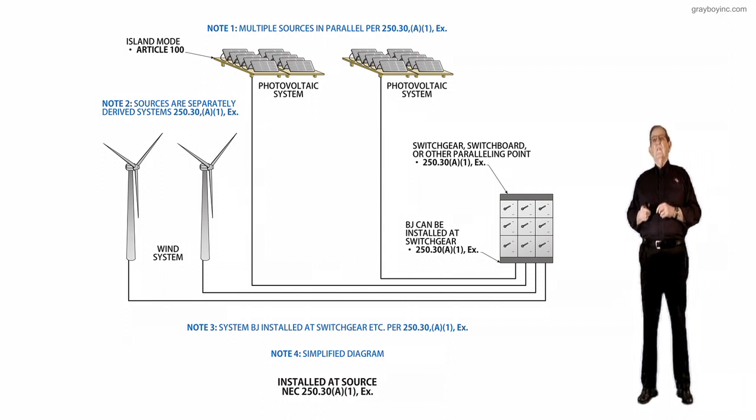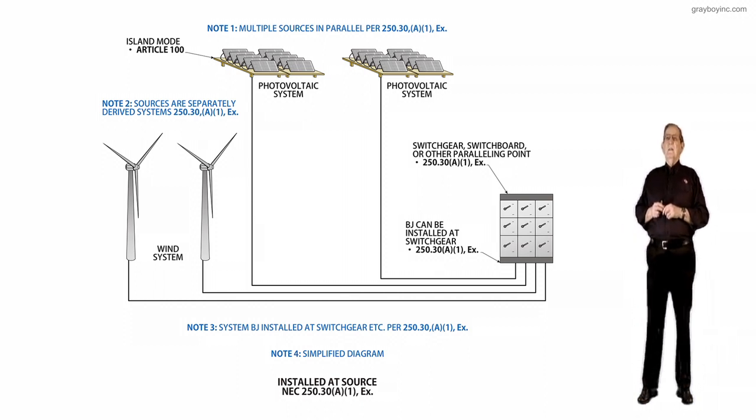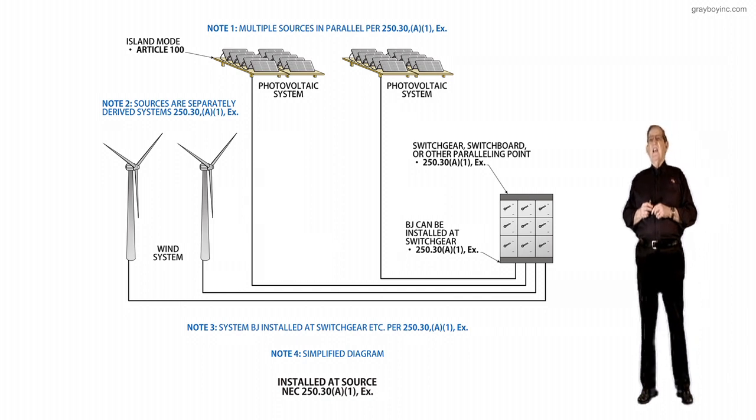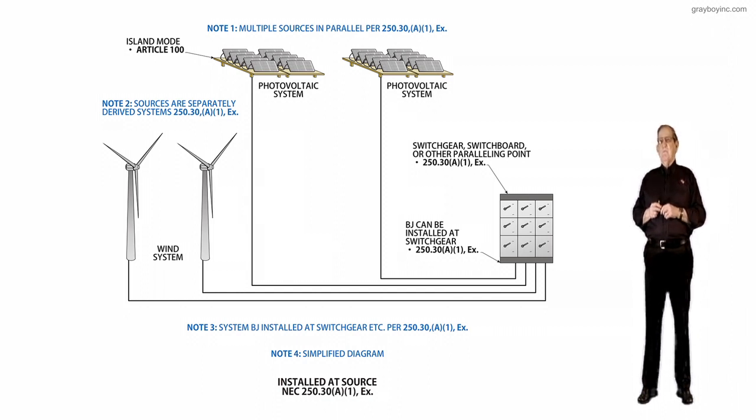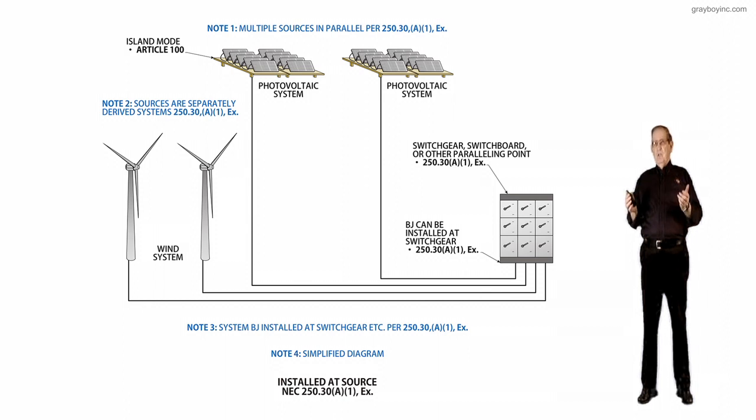And then notice at the service equipment, it's switchgear, panel board, or the paralleling point that takes place as permitted in 250.30A1 exception. And then notice that the bonding jumper can be installed at switchgear as permitted in 250.30A1 exception again.